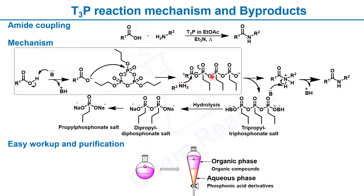This carboxylate anion then adds to T3P, forming a reactive ester. The amine nucleophile then adds to this reactive ester, forming the amide product as well as the byproduct tripropyl triphosphonate salt, which is water-soluble. During workup, if we use sodium bicarbonate or 10% sodium hydroxide solution, that can hydrolyze this triphosphonate salt to a dipropyl diphosphonate salt, and further to a propyl phosphonate salt.